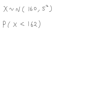To work out the probability that x is less than 162, we're working with a normal distribution that has a population mean of 160 and a variance of 25, or 5 squared, which gives a standard deviation of 5.